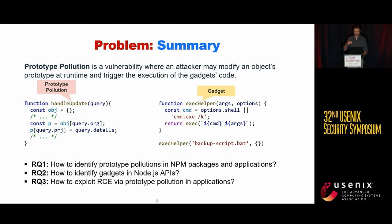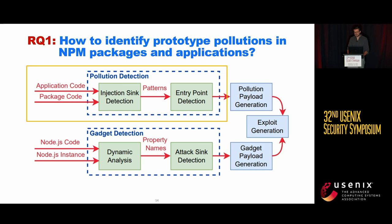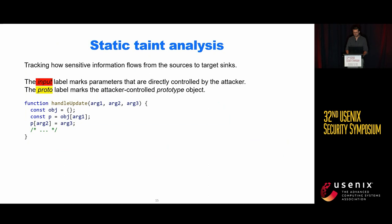We also investigate whether this is actually a problem in real applications. How do we identify prototype pollution at scale? We implemented static analysis for Node.js applications and npm packages. We used analysis where we mark attacker-controlled data with an initial input label. However, we cannot define these things syntactically, because not every property assignment leads to prototype pollution. Instead, we use what we call multi-label taint analysis.